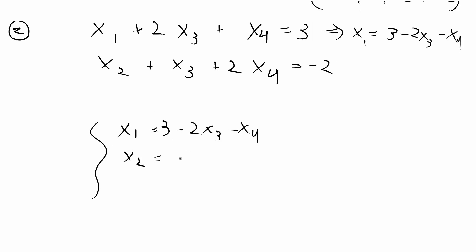So x1 is going to be equal to 3 minus 2x3 minus x4, and we're going to do the same thing for x2, so that's going to be equal to -2 minus x3 minus 2x4, just getting x2 and x1 on one side.